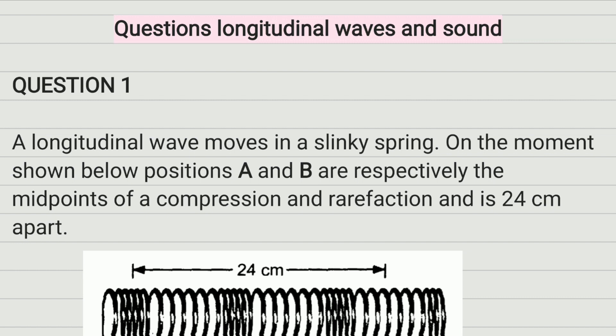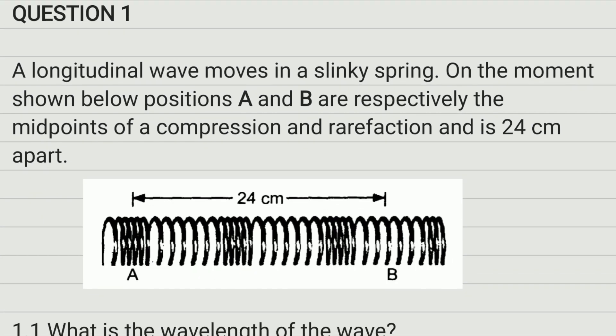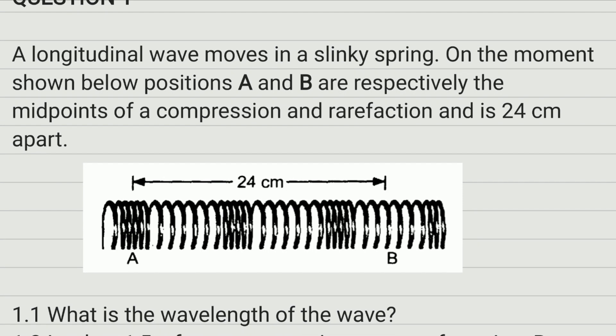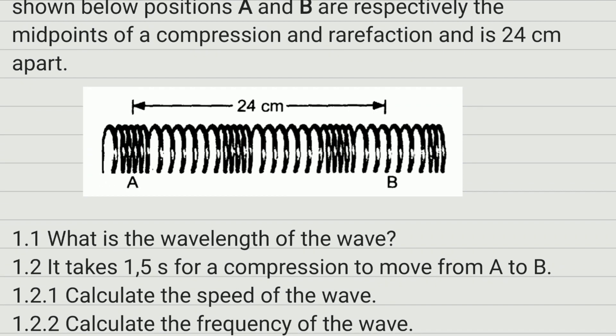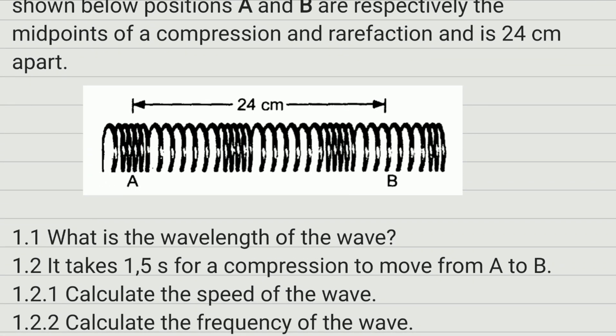Question one: a longitudinal wave is moving in a slinky spring. The diagram shows positions A and B, which are respectively the midpoint of the compression and rarefaction, and they are 24 centimeters apart. What is the wavelength of the wave?